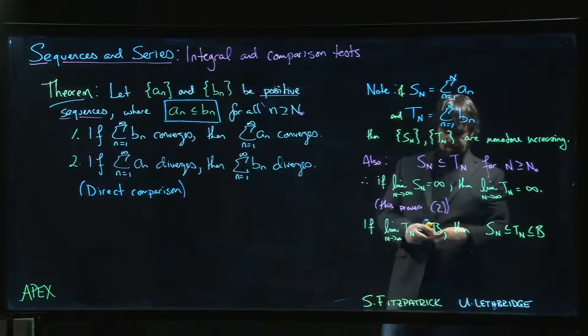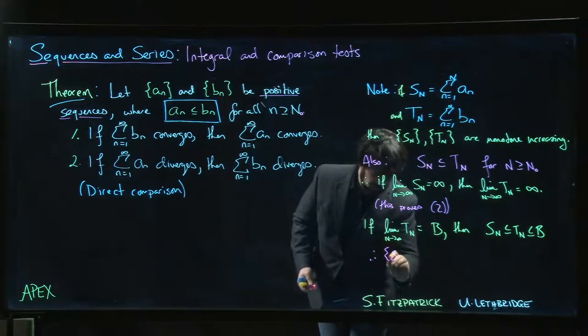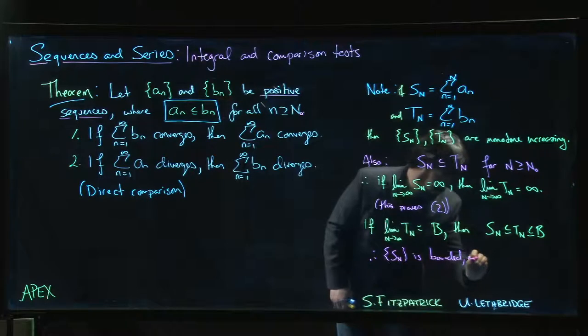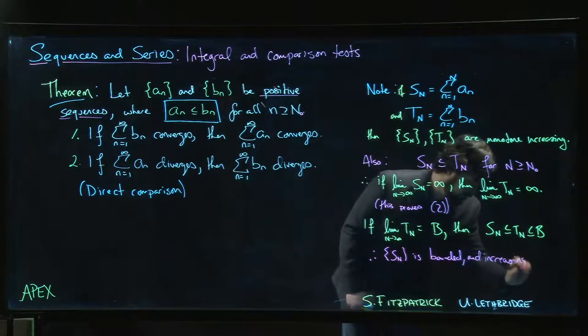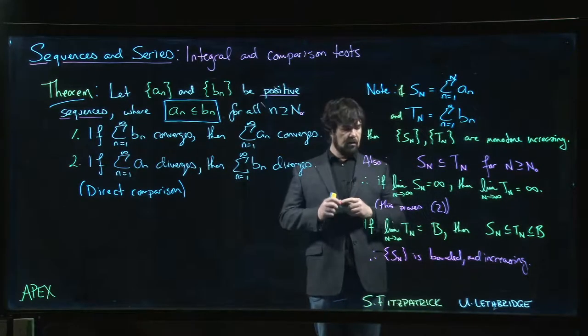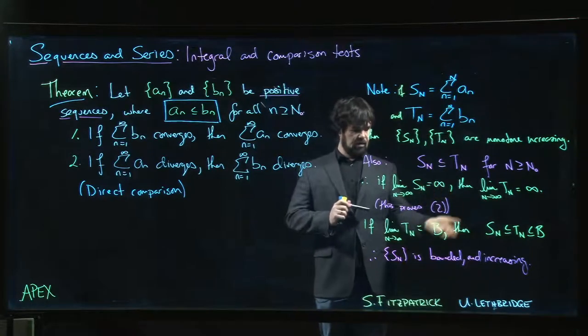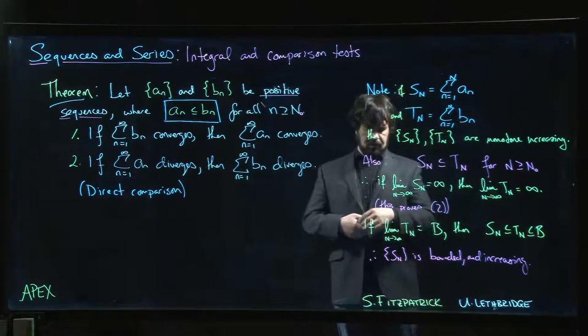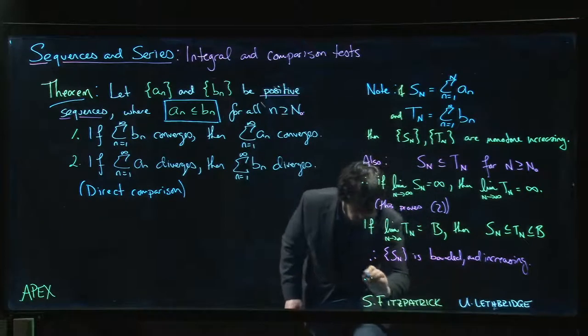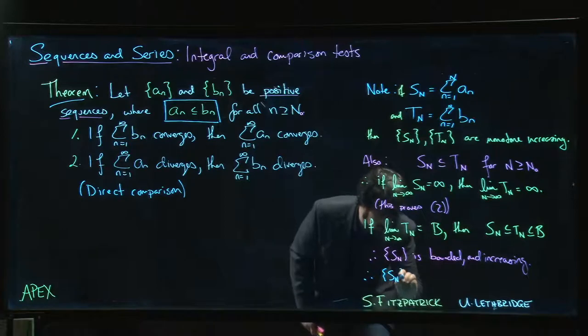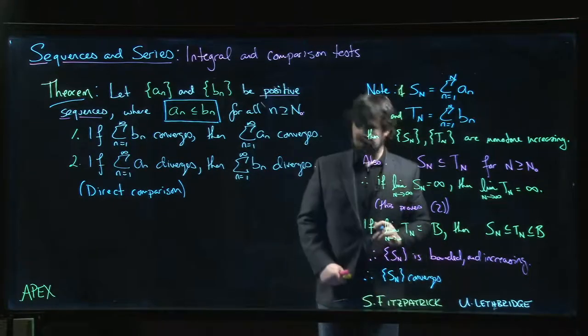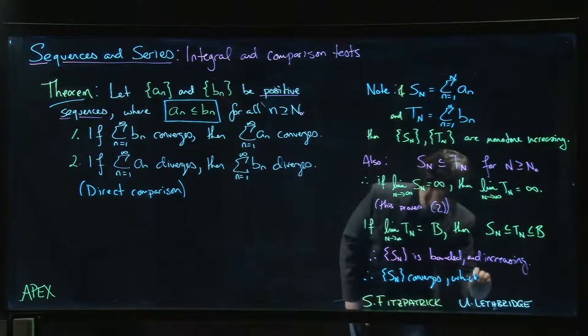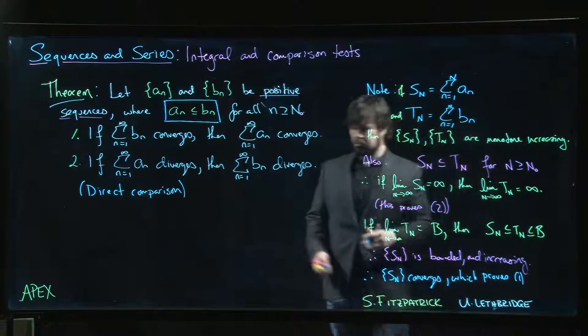Well that means that this sequence is bounded and it's increasing. So what do we know about bounded increasing sequences? We have the monotone convergence theorem. It says if you have a bounded increasing sequence it has to converge. So that's exactly the scenario of the first part. That means that this sequence converges, which is the same thing as saying that the series converges, and that proves the first part.